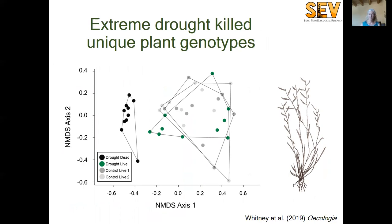This plot uses data on unique SNPs to look for genetic differentiation among cohorts. Each point is a replicate cohort of individuals from a unique plot in the field experiment. We expect that these individuals that died, shown in black here, under drought, had distinctive traits and alleles that made them less resistant to drought.